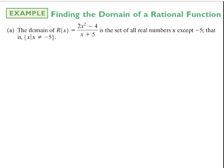The simplest way to write that is in set builder notation, where we say it's the set — using curly brackets — of all real numbers x, such that x cannot equal negative 5. So any real number that's not negative 5 is in the domain.